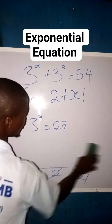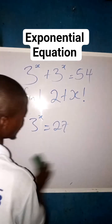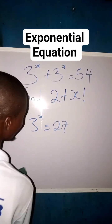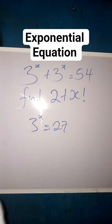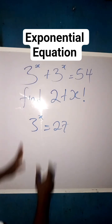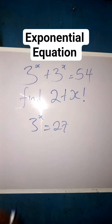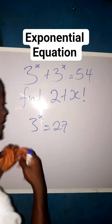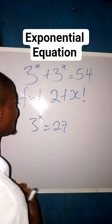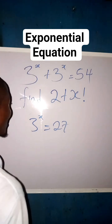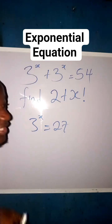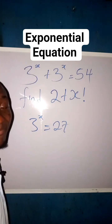So what do we do next? The thing we can do next is that we will write this 27 in a way that we have a base of 3 and a different power.